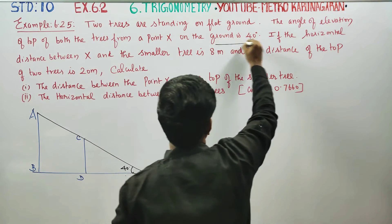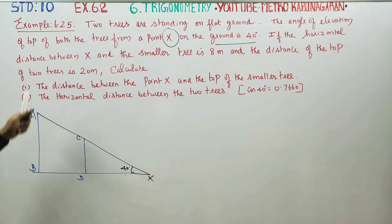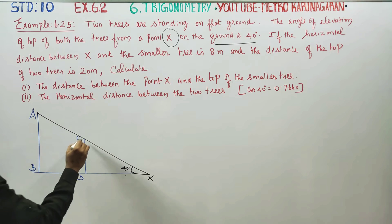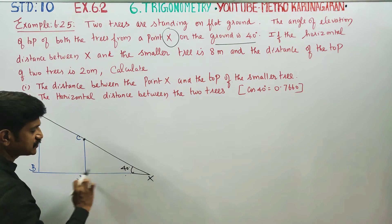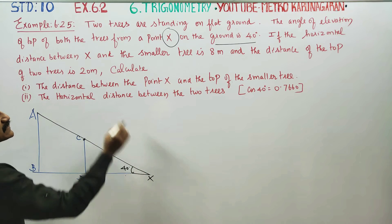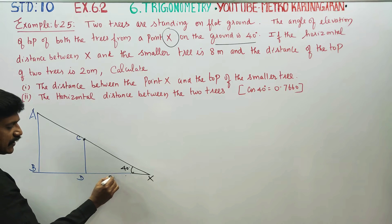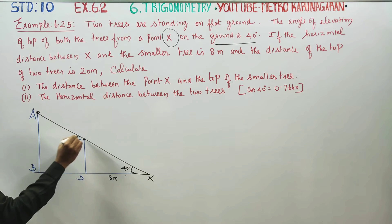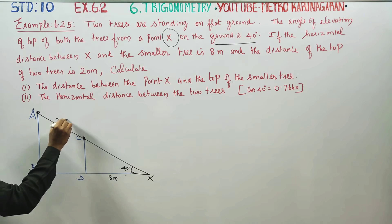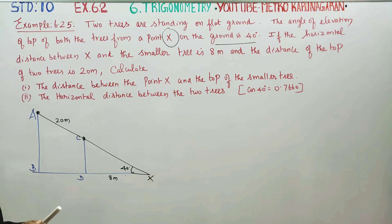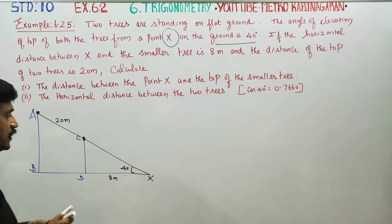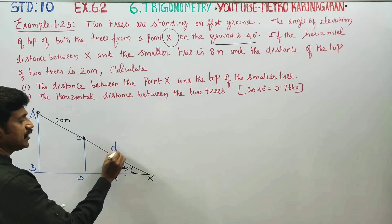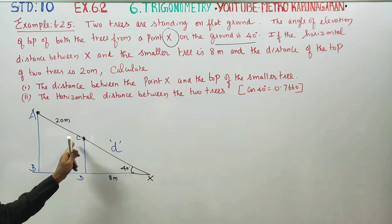The horizontal distance between X and the smaller tree is 8 meters. The distance between the tops of the two trees is 20 meters. We need to calculate the distance between point X and the top of the small tree. Let's call that distance D.